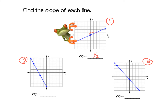Go ahead and find the slope of number two. For number two, you go down four and over two. So it's negative four over two, which simplifies to negative two — my slope is negative two. The last one on the right went down five and to the right four. So my slope is negative five-fourths.